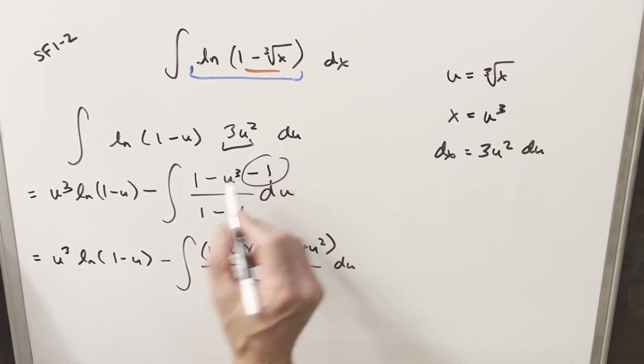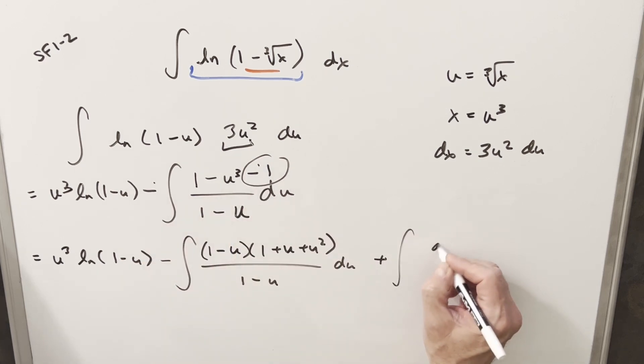And then for the second integral, we have this minus 1 here. I'll distribute the minus to the minus. And then here, we're going to have just plus du over 1 minus u. But then we get cancellation here with the 1 minus u's. This is going to be power rule. This is going to be easy. So let's just continue and integrate this.